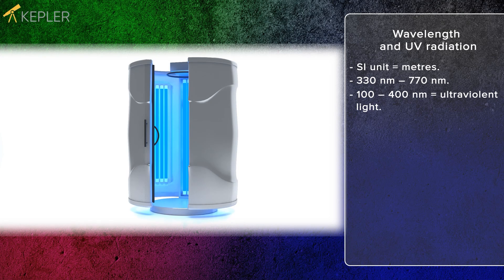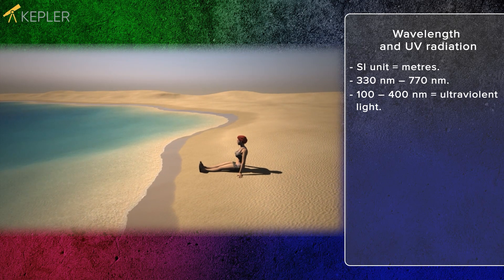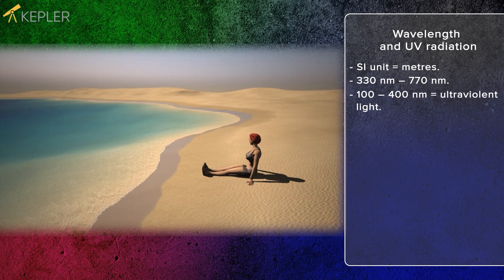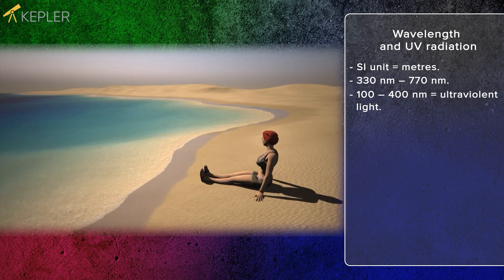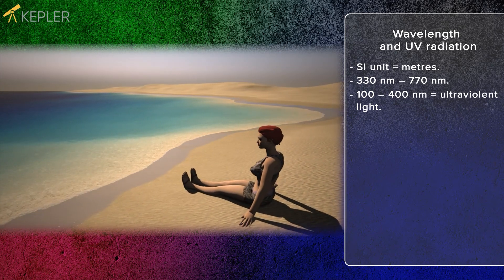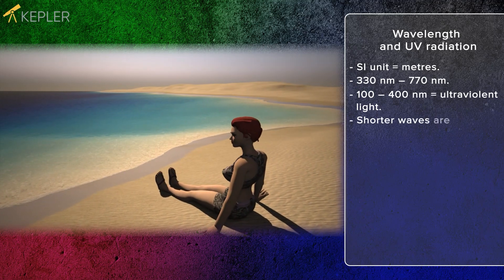Those exposed to UV light can suffer small wounds on the cornea of the eye. If a person is exposed to UV radiation for a long time, it can lead to skin cancer. The shorter the electromagnetic waves, the more dangerous they are.